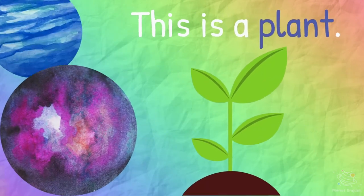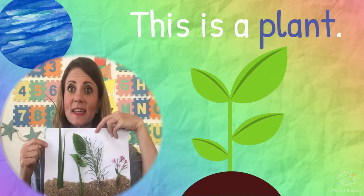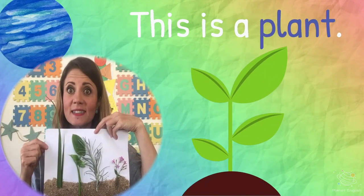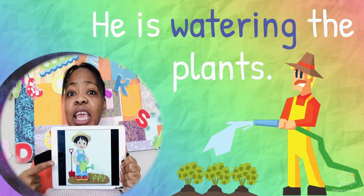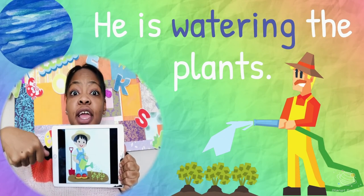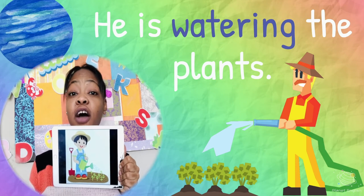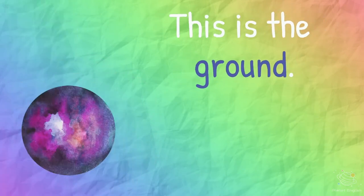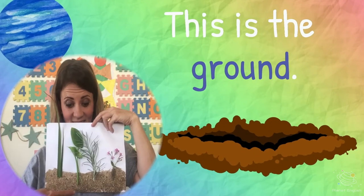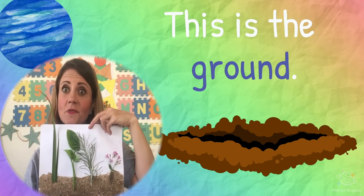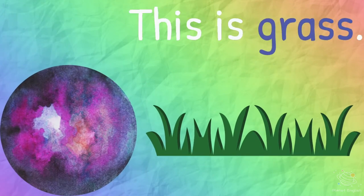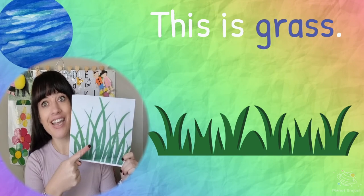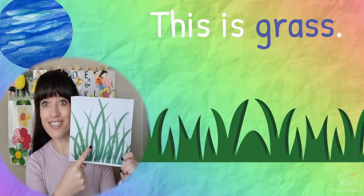This is a plant. He is watering the plant. This is the ground. This is grass.